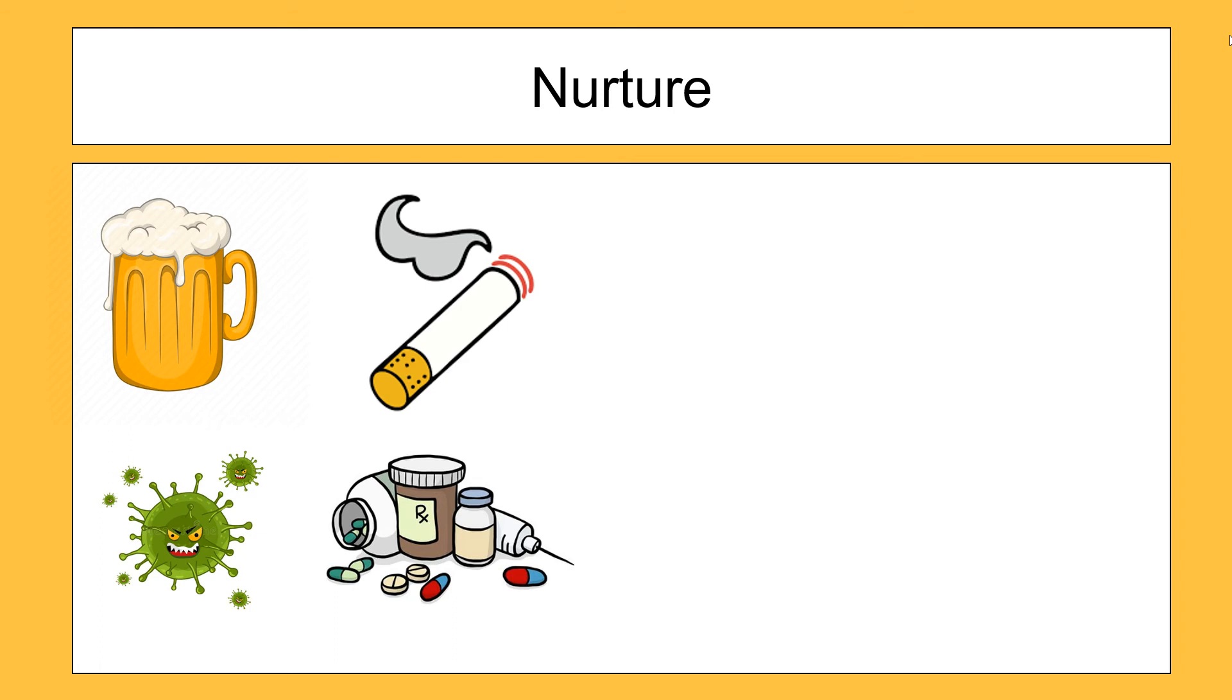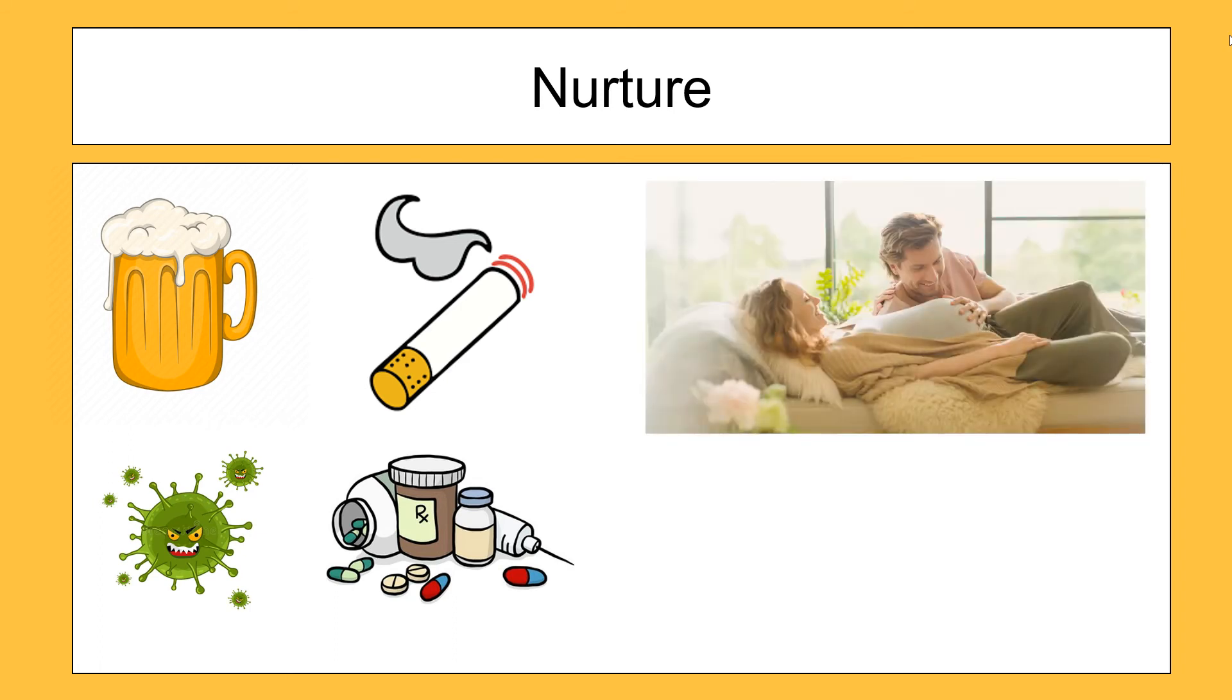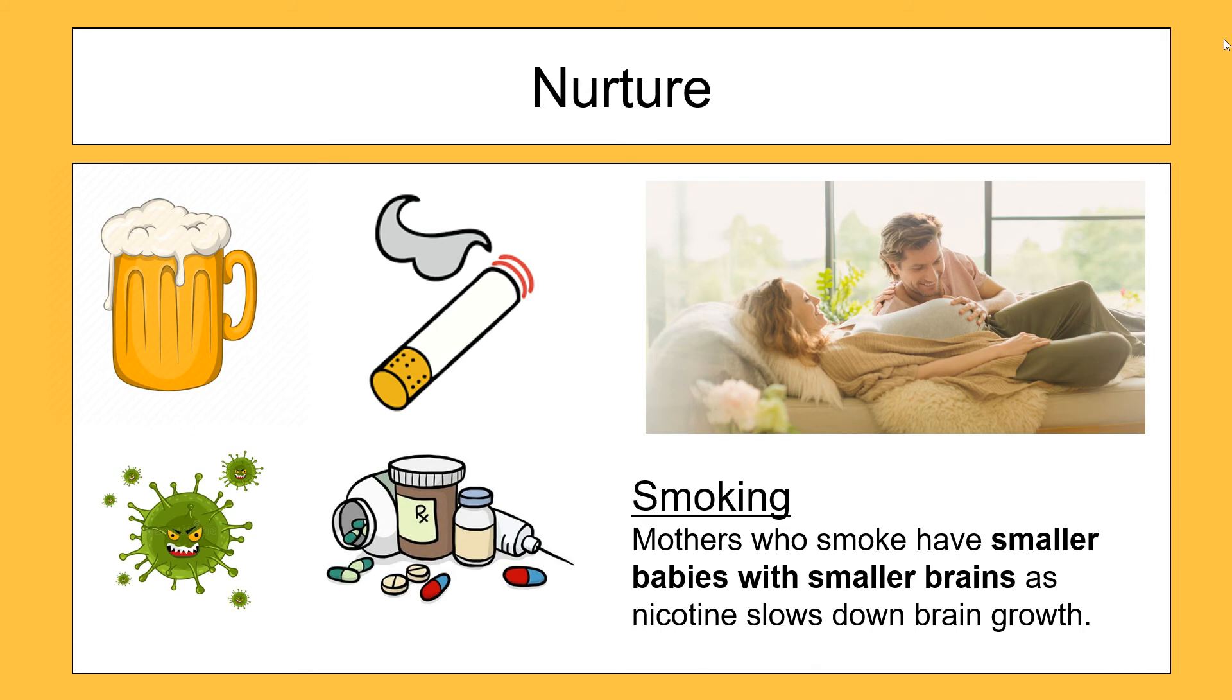However, there is a way that we can use the environment and our nurture to our advantage. And that is through talking to the baby whilst it's in the womb. There is evidence that talking to the baby whilst it's in the womb can do two things. It can increase and stimulate brain growth, but also it can help the baby to recognise voices from the minute that it is born. In terms of having a good example for the exam, a nice one is just to talk about smoking. Smoking is not part of nature, therefore it's part of nurture. And mothers who smoke have smaller babies with smaller brains as the nicotine slows down the brain growth. So as we can see, there's a lot of negative ways to impact the development of a brain of a baby.